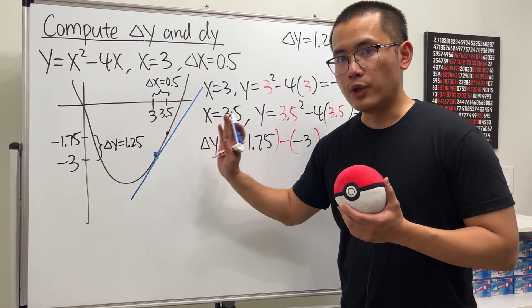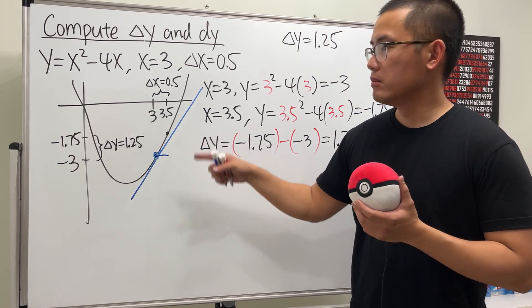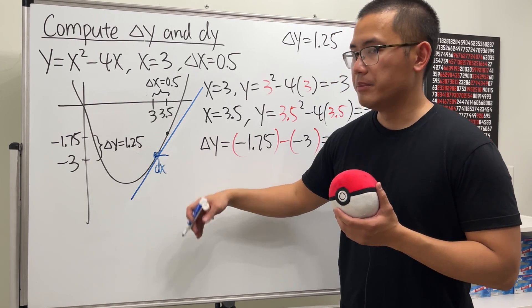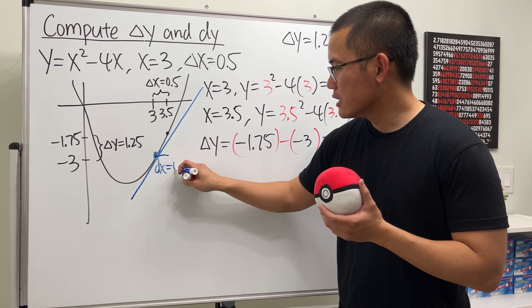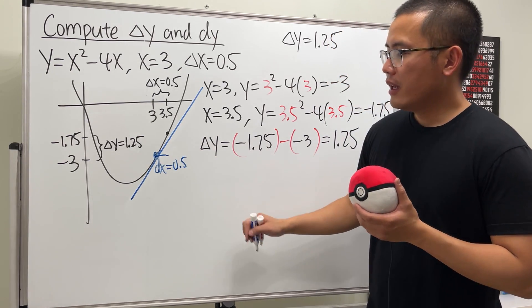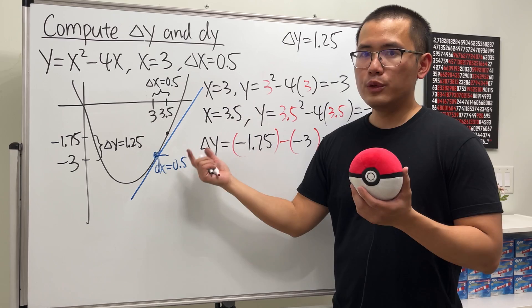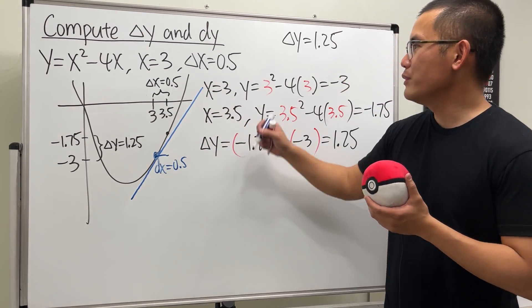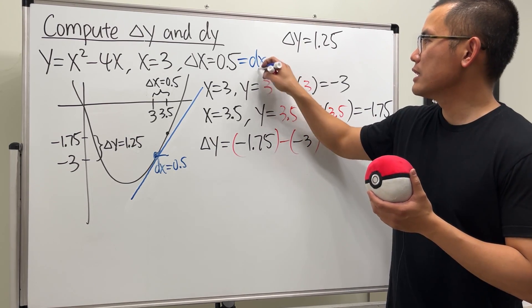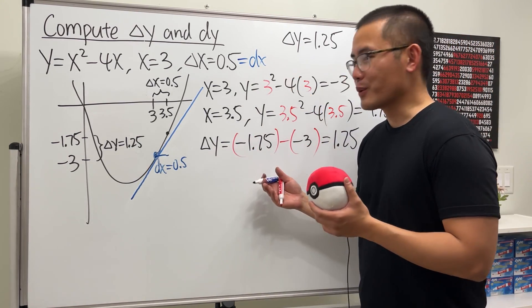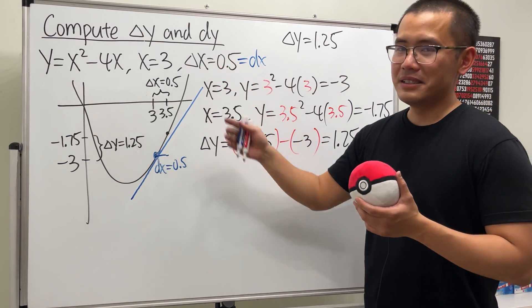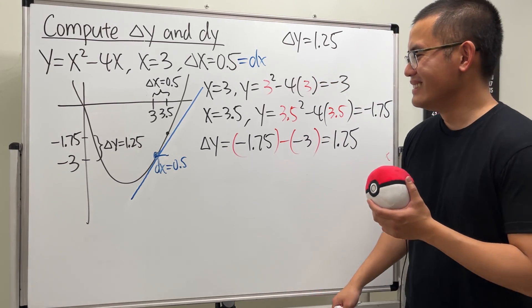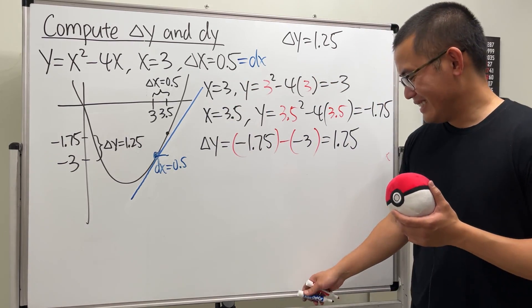Now what we are going to do next is look at this. This is dx. Earlier, we just went from 3 to 3.5, and that's the change in x, that's 0.5. Now starting at this point here, we are going to move to the right the same amount, 0.5. This time we'll denote this by dx because we're on the tangent line. So dx is 0.5.